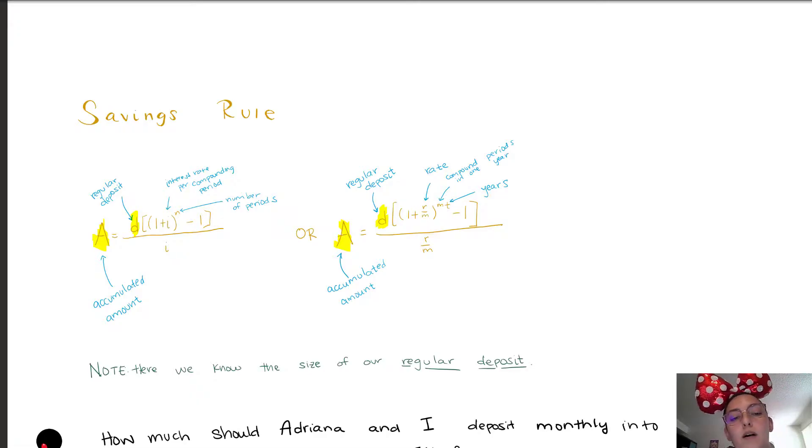And n is going to denote the number of periods in total, which is how we wrote it out on the table. So instead of writing it m times t, compounding periods times the years, we went ahead and put them together to go by 60, 59, and that was our total periods. Okay, so this is going to be our savings rule.